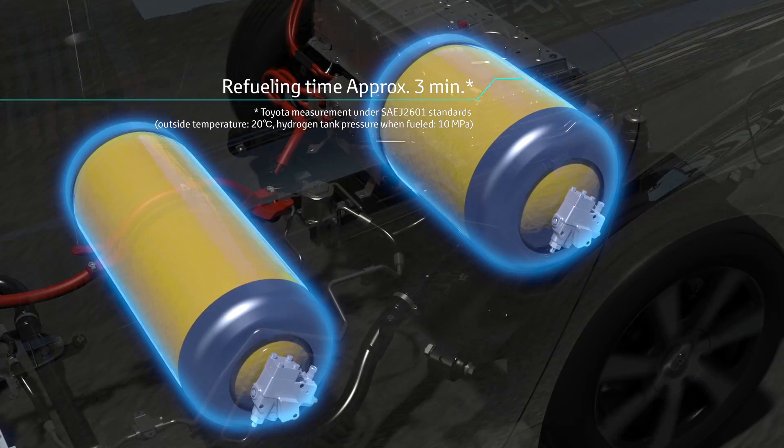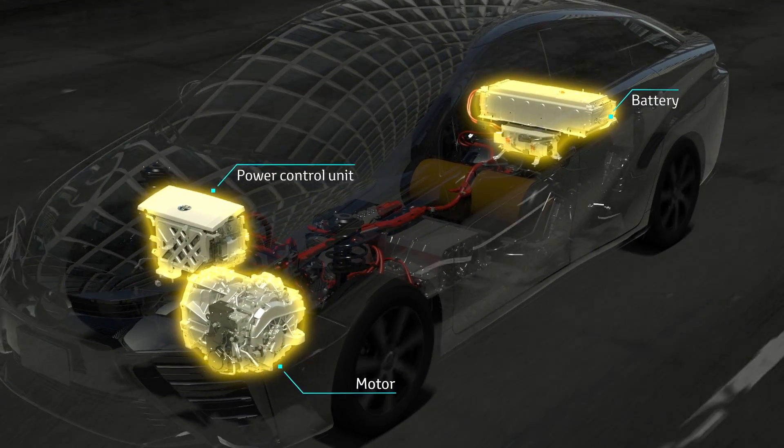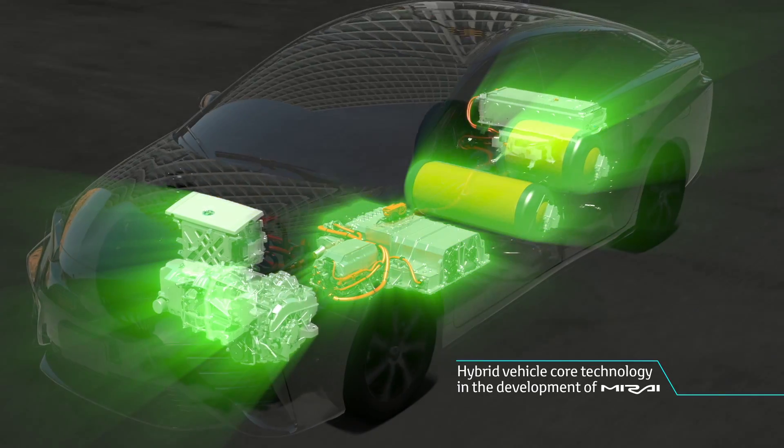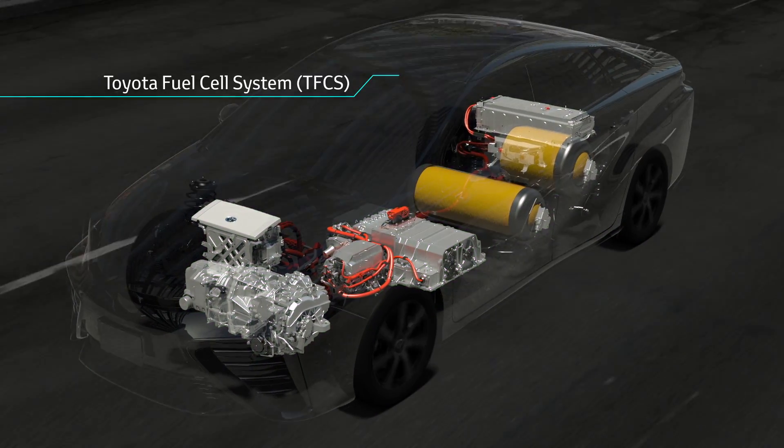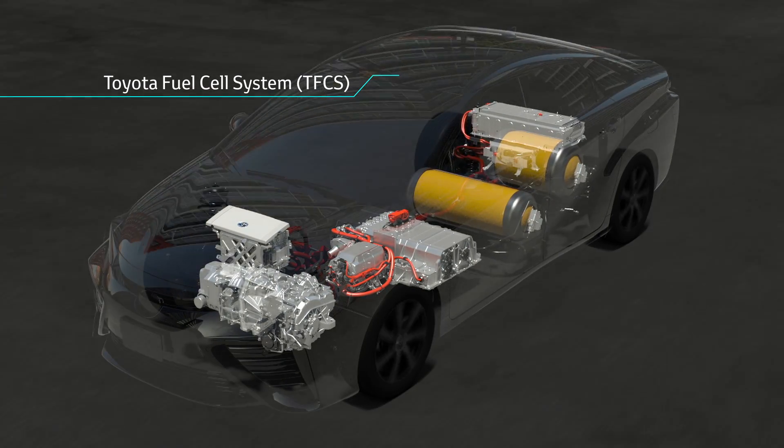Leveraging Toyota's hybrid vehicle technology, the power control unit manages the fuel cell output power and battery power with detailed precision. This innovative FC unit and HV technology combination makes the Toyota fuel cell system.